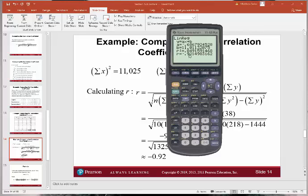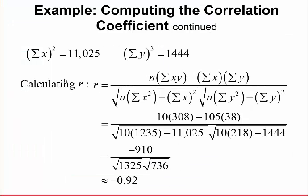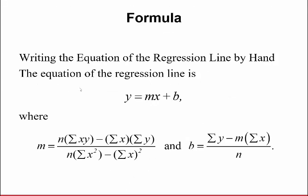R is really close to negative 1, which means there is a strong negative linear relationship between the two variables. Now we want to find a line that fits the data really well. A regression line is given by Y — the score on the prejudice exam — equals the slope times X, which is the years of education, plus some Y-intercept.